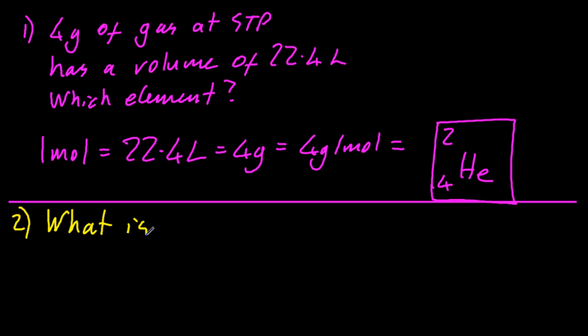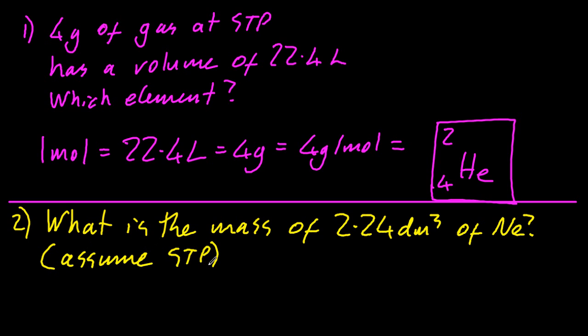And a variation on that for question 2. What's the mass of 2.24 decimetres cubed of neon? Assuming STP, so we can write it out like a little ratio line.